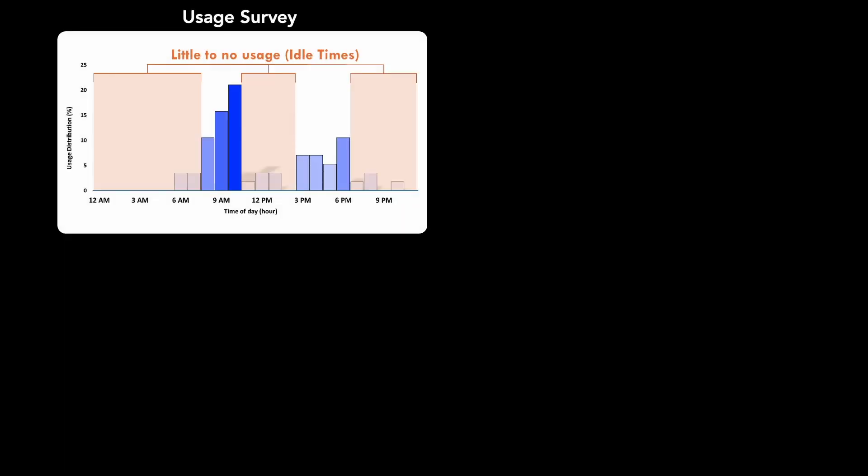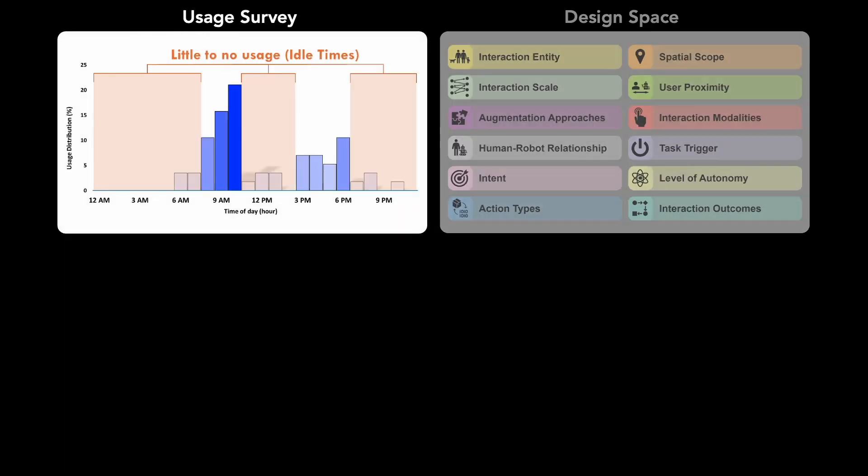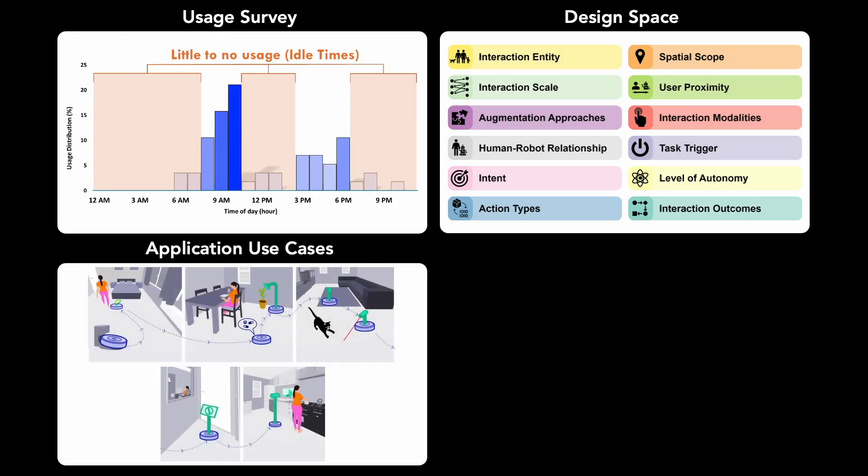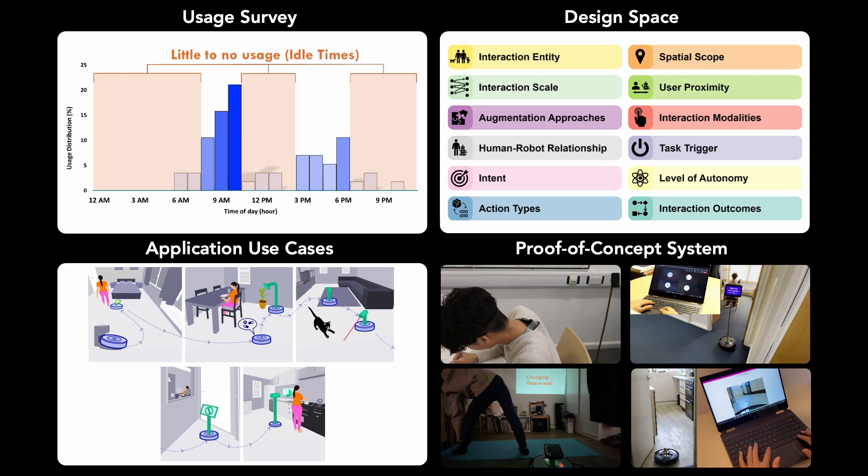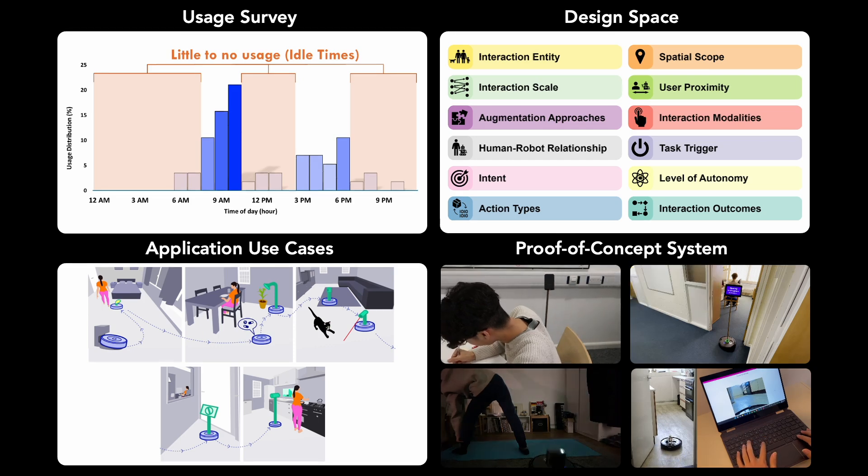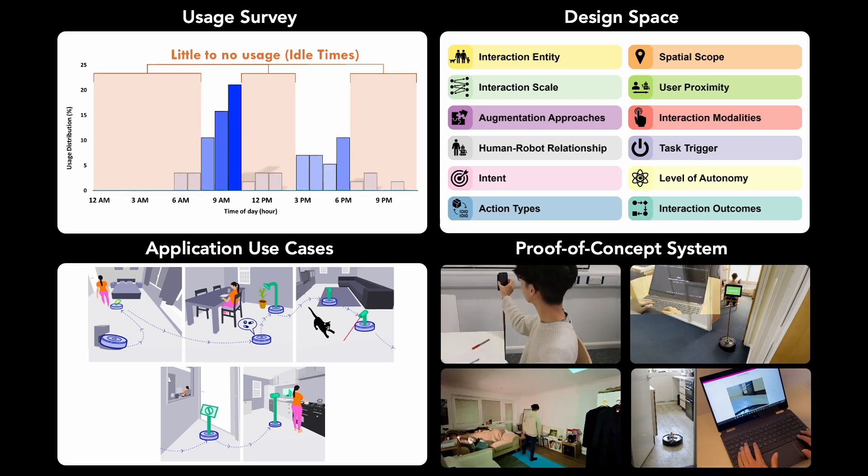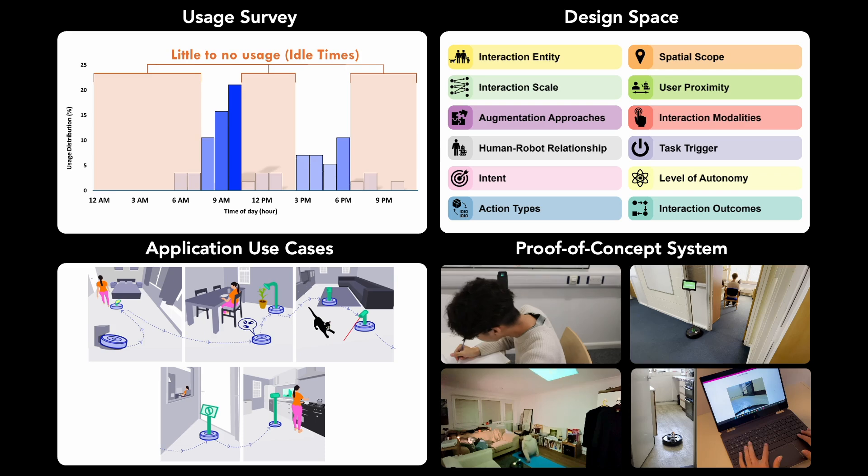In summary, our paper explores repurposing idle times of domestic robots for additional tasks. We developed a design space with 12 dimensions to guide future implementations and reveal significant opportunities by contributing a list of over 100 application use cases. Our proof-of-concept system demonstrates the technical feasibility of these concepts, highlighting how domestic robots can better support modern lifestyles. For more details, please refer to our paper.